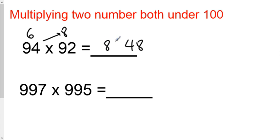So you would write the 86, 48. Now if you did 94 minus 8, you would still get 86, so it works either way, but it's a little bit easier to subtract 6 from 92 than 8 from 94. So you get 8648 as your answer.